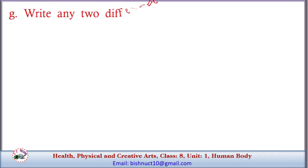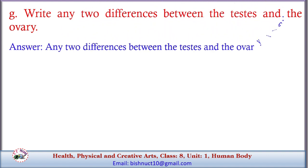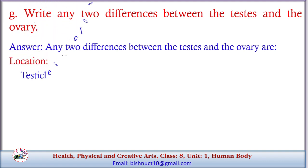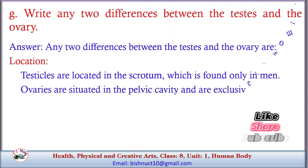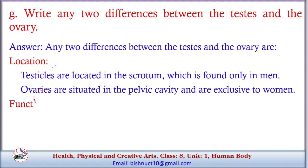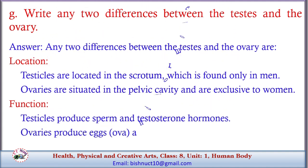G. Write any two differences between the testes and the ovary. Any two differences: Location — testicles are located in the scrotum, found only in men; ovaries are situated in the pelvic cavity and are exclusive to women. Function — testicles produce sperm and testosterone hormones; ovaries produce eggs (ova) and hormones such as estrogen and progesterone.